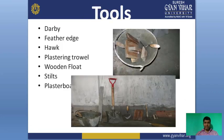These are some tools used for plastering: Darby, feather edge, hog plaster trowel, wooden float, steel, and plasterboard. These are the tools used for plastering.